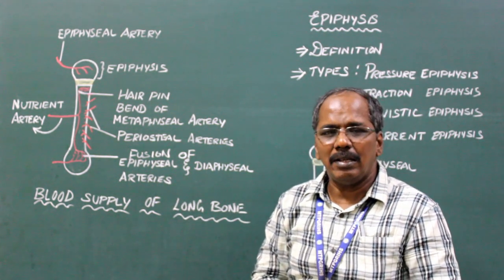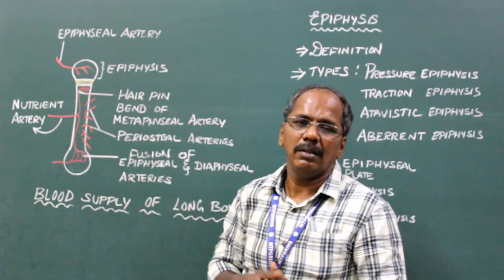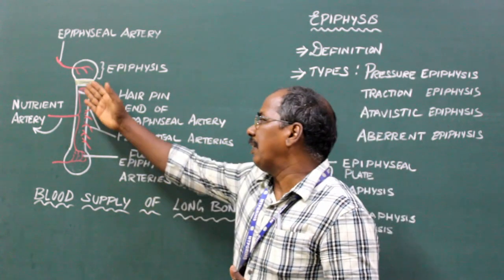The nutrient artery supplies medullary cavity, inner two-thirds of the cortex, and metaphysis.